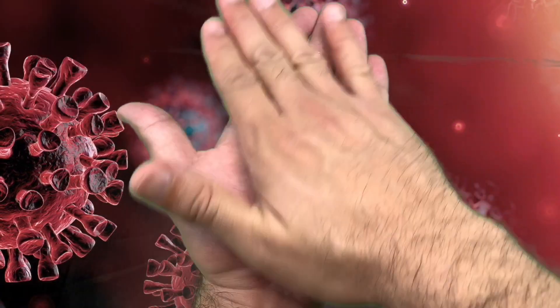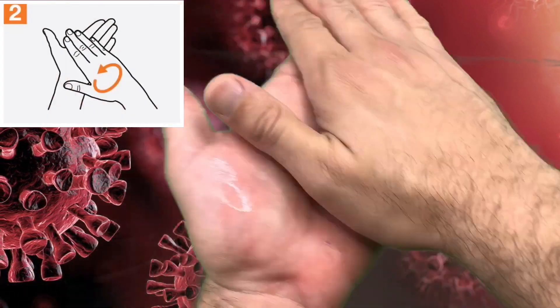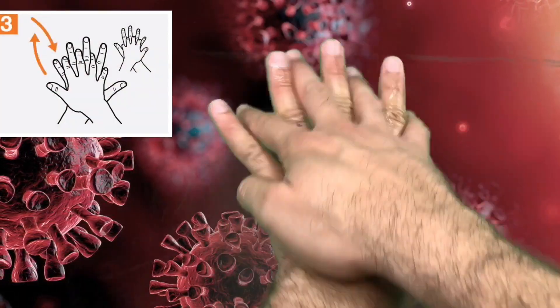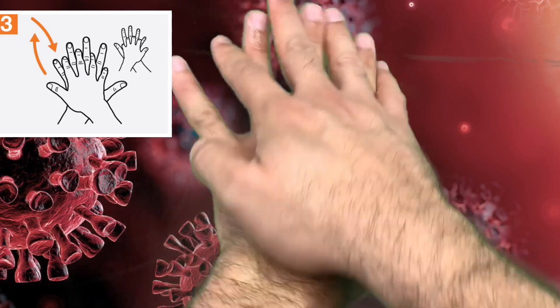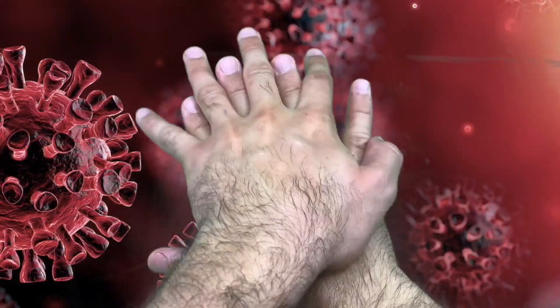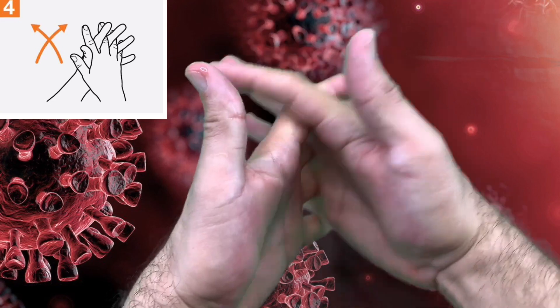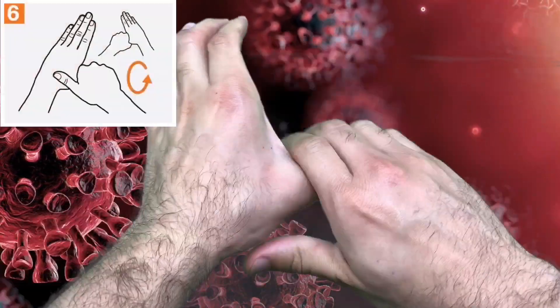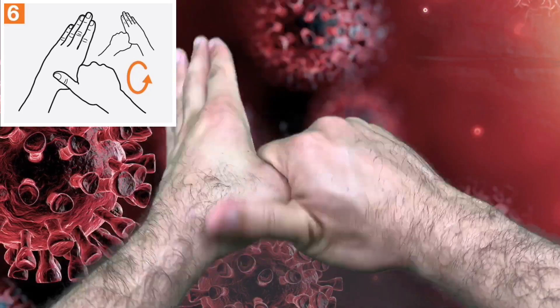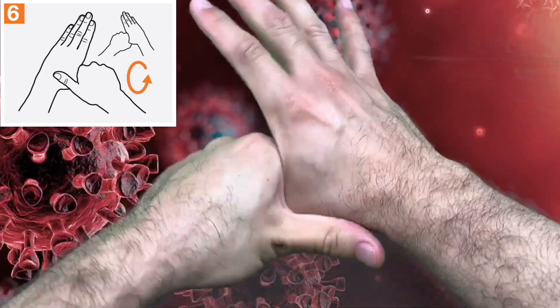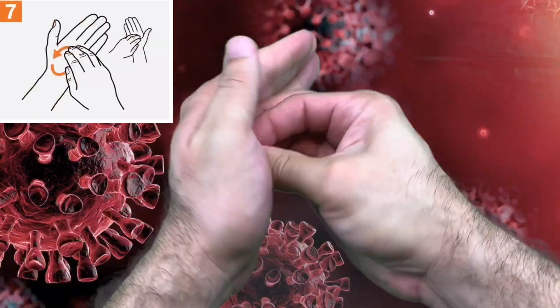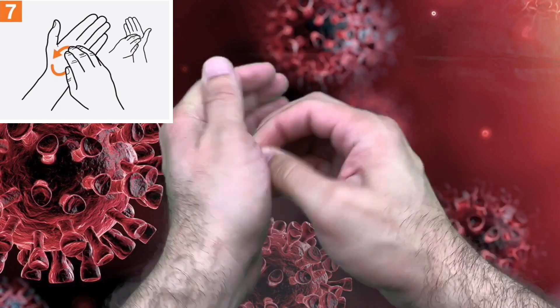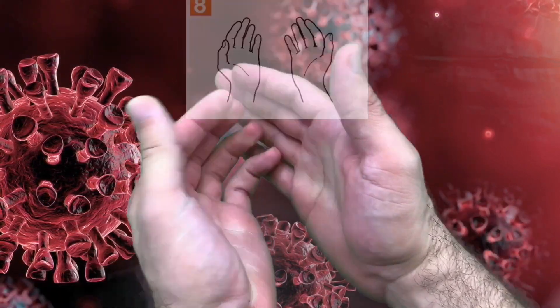So let's start by putting sufficient amount of alcohol. Rub hands palm to palm, then right palm over left dorsum with interlaced fingers and vice versa. Palm to palm with fingers interlaced, back of fingers to opposing palms with fingers interlocked. In rotational rubbing of left thumb closed in right palm and vice versa, then rotational rubbing backward and forward with closed fingers. Your hands are safe.